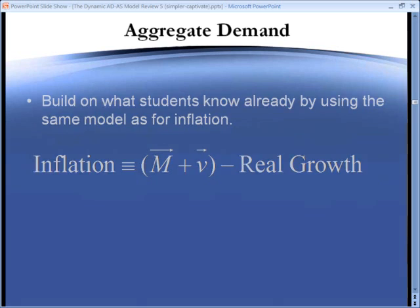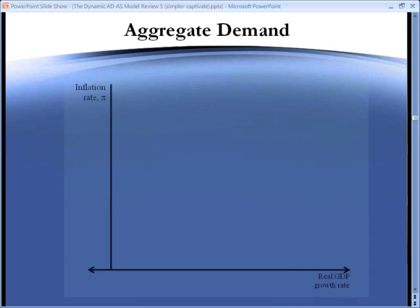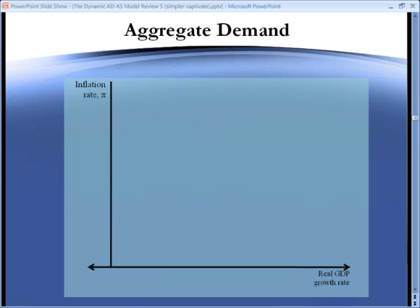Let's take a look at this on a graph. Once again, we have the inflation rate on the vertical axis and the growth rate of real GDP on the horizontal axis. Our aggregate demand curve is then a straight line with a slope of negative one.